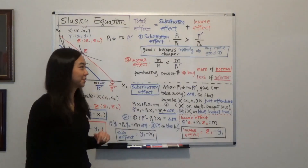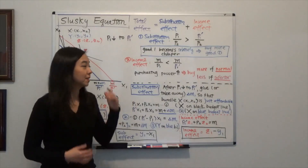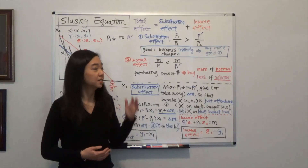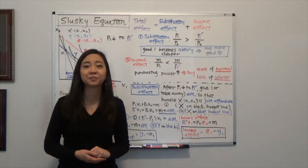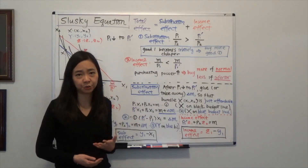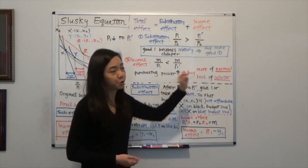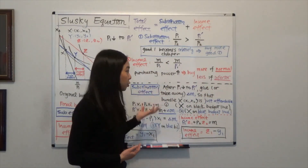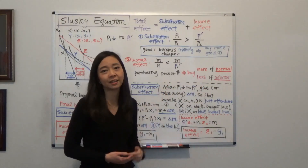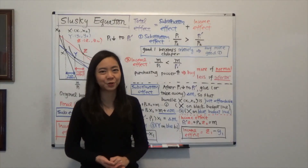Now the income effect is this. When the price of good one goes down, even though your monetary income has not changed, the purchasing power of your income has gone up. So the income effect tells you: if the good is a normal good, then you should buy more of that good. But if the good is an inferior good, then you should buy less of it. So it really depends on whether good one is a normal good or an inferior good.